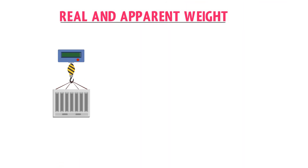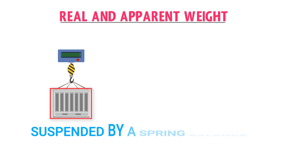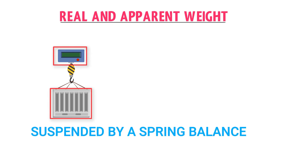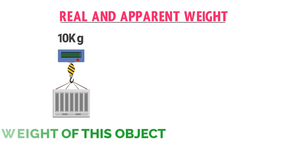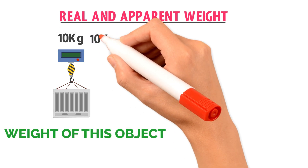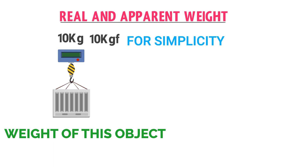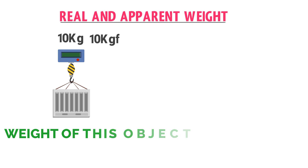Let's consider an object suspended by a spring balance. Let the reading on the spring balance be 10 kg. Hence the mass of this heavy object is 10 kg, and the weight of this object is 10 kg force. For simplicity, in this lecture I will consider kg as a unit of weight.